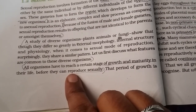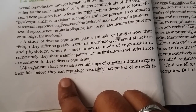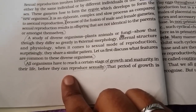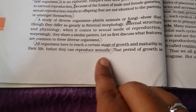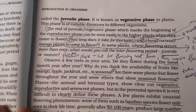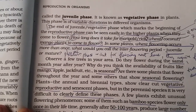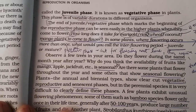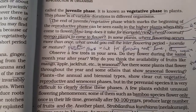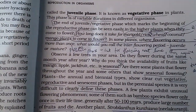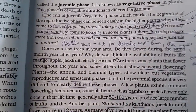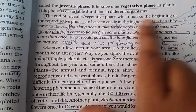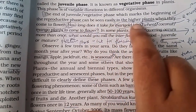All organisms have to reach a certain stage of growth and maturity in their life before they can reproduce sexually. That period of growth before reproduction is known as the vegetative phase, or juvenile phase. This phase has a variable duration, and its end marks the beginning of the reproductive phase.